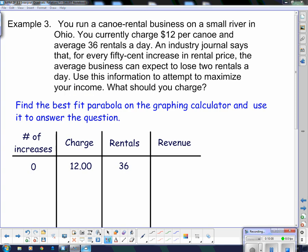Now this next one, we have to actually make a table of values. It says you run a canoe rental business on a small river in Ohio. You currently charge $12 per canoe and average 36 rentals a day. An industry journal says that for every 50 cent increase in rental price, the average business can expect to lose two canoe rentals a day. Use this information and attempt to maximize your income.